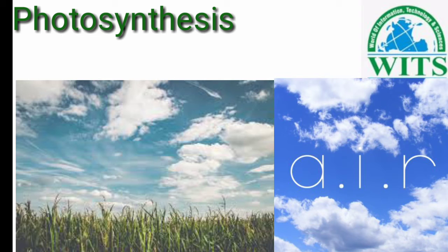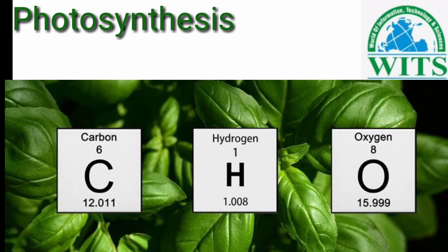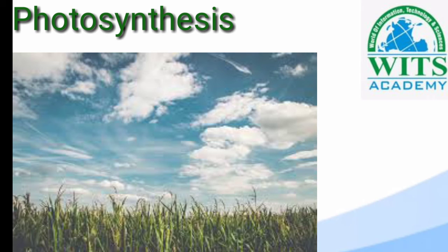Now we will discuss the process of photosynthesis — کہ photosynthesis کا process leaf میں کیسے ہوتا ہے۔ ہماری ہوا میں carbon dioxide موجود ہوتا ہے۔ Leaf کو تین چیزوں کی ضرورت ہوتی ہے: carbon dioxide، water، اور hydrogen۔ Carbon dioxide ہوا میں موجود ہوتا ہے اور یہ stomata کے ذریعے leaf کے اندر جاتا ہے۔